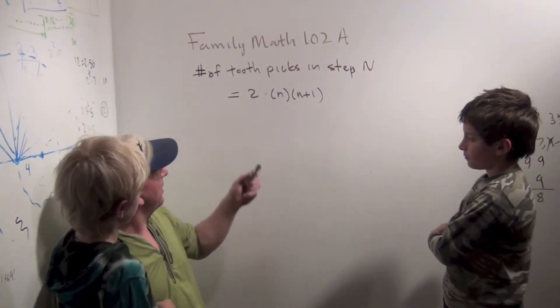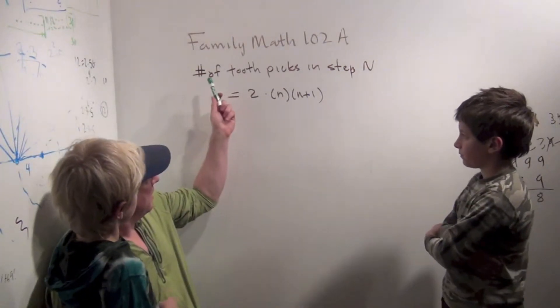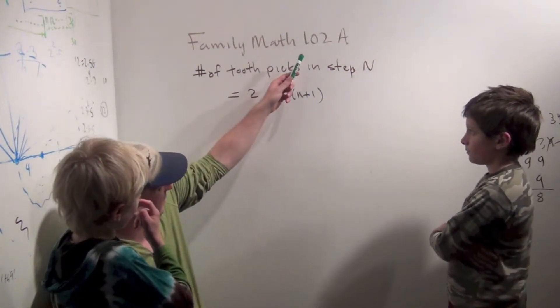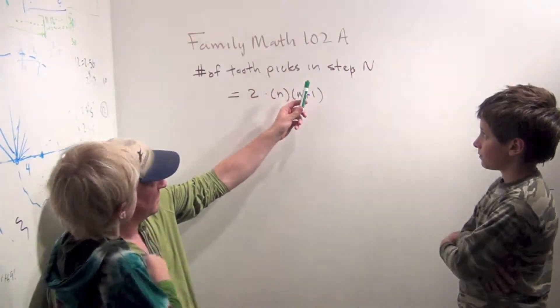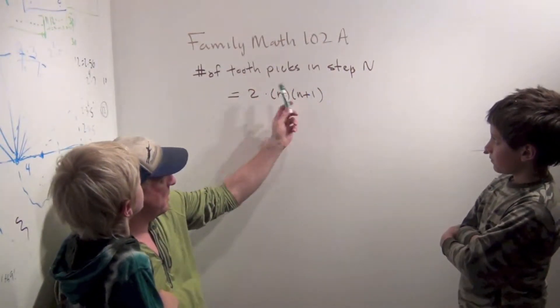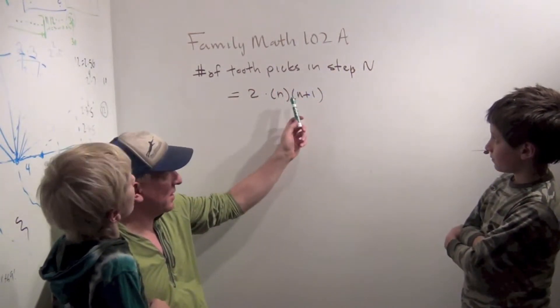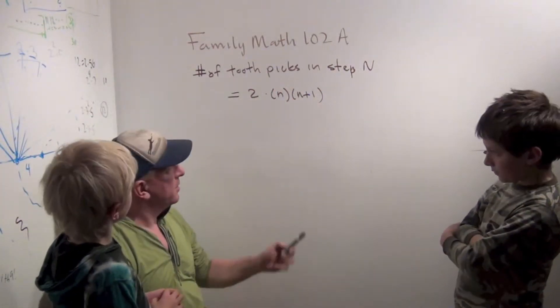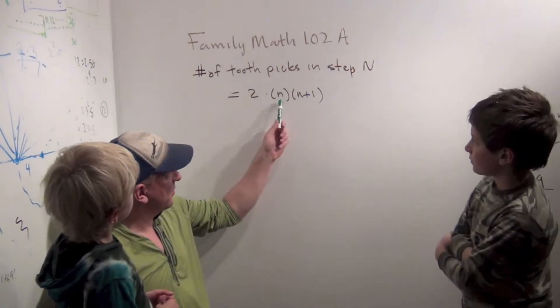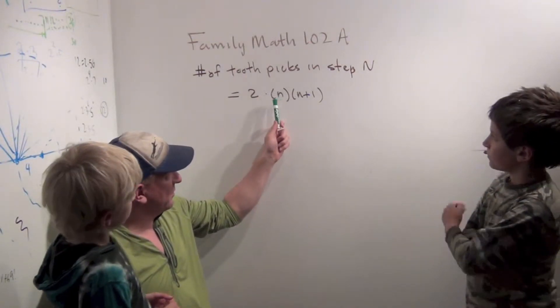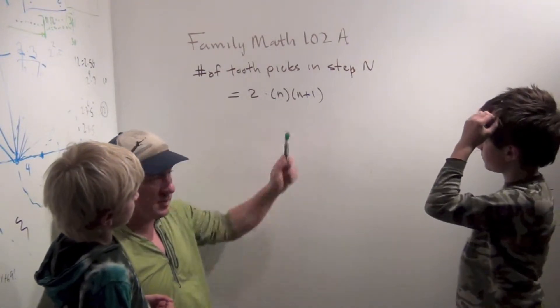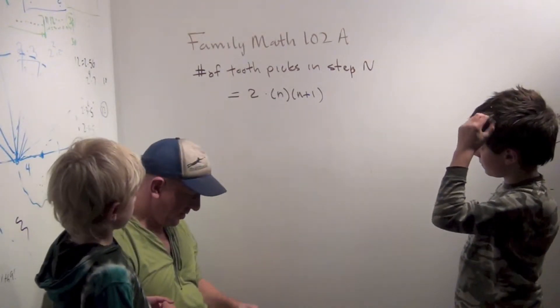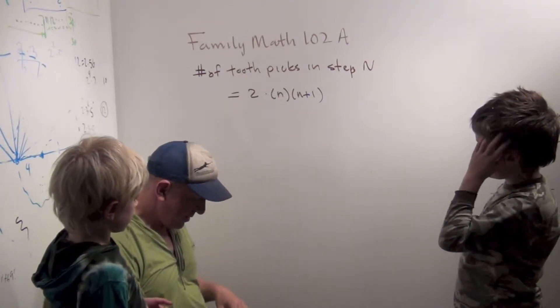If you watch FamilyMath 102, we found the number of toothpicks in step N is 2 times N times N plus 1. We've seen this formula — a formula involving N times N plus 1 — before. Do you remember what it is?